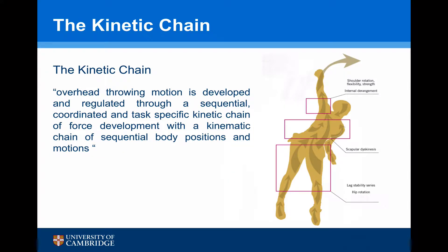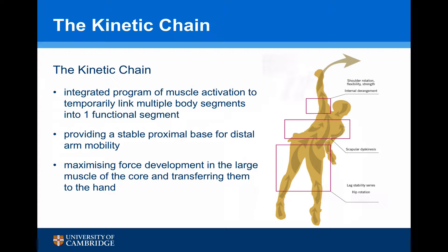We're not just looking at the shoulder girdle itself. We need to consider the kinetic chain. The overhead throwing motion is developed and regulated through a sequential, coordinating, task-specific kinetic chain of force development, with a kinetic chain of sequential body positions and motions. This is essentially an integrated program for muscle activation to temporarily link multiple body segments into one functional segment, providing a stable proximal base for distal arm mobility, maximising force development in the large muscles of the core and transferring them through the shoulder to the hand.